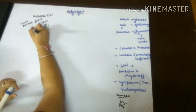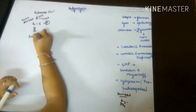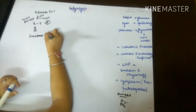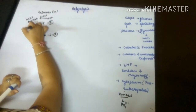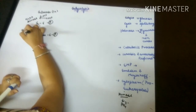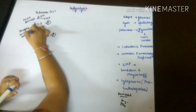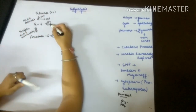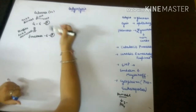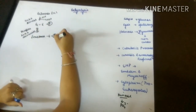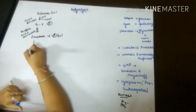Glucose-6-phosphate is converted into fructose-6-phosphate with the help of enzyme phosphoglucose isomerase, because glucose-6-phosphate and fructose-6-phosphate are isomers of each other. Fructose-6-phosphate is also a six-carbon sugar.